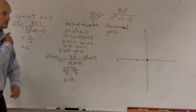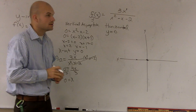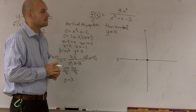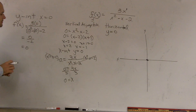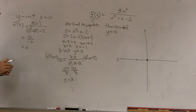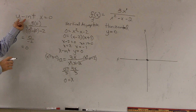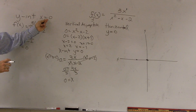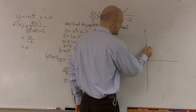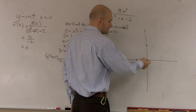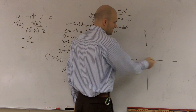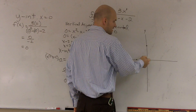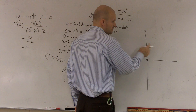A student asks: for the x-intercept, do you plug in for f(x), or for x? For the y-intercept, x is equal to 0. Because if you look at a graph and it crosses the y-axis, what is the x value? It's not going left or right, so it's at 0 — that's why you plug in 0 for x.